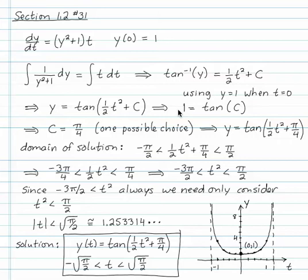There are many numbers that have a tangent of 1. We're going to choose pi over 4. We could choose others like 5 pi over 4 or minus 3 pi over 4, but then we'd have to adjust our work when we check the domain in a second. So y is equal to tan of 1 half t squared plus pi over 4.